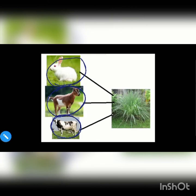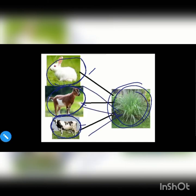What do they eat? They eat plants. Animals like rabbit, goat, and cow eat plants.